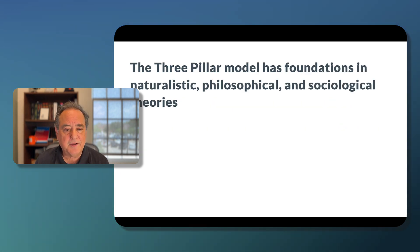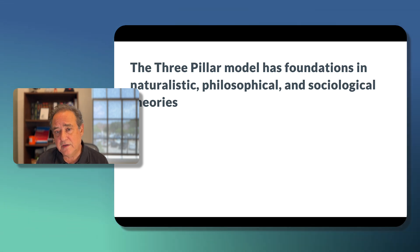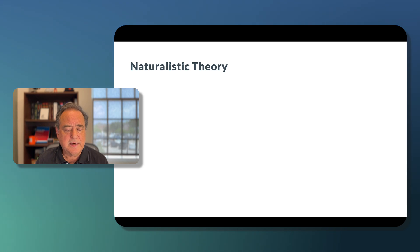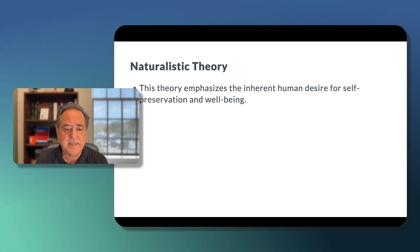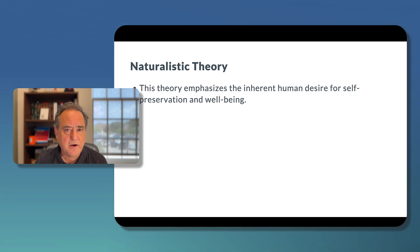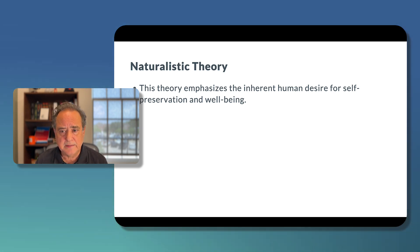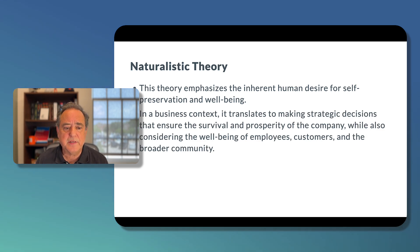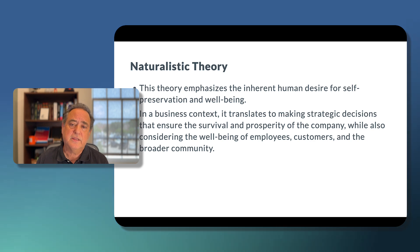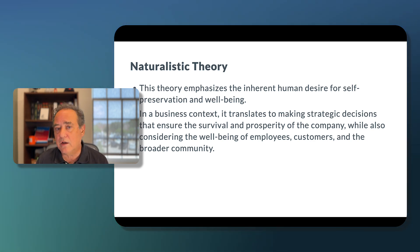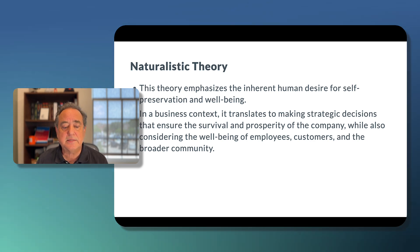The three-pillar model has foundations in naturalistic, philosophical, and sociological theories. Naturalistic theory emphasizes the inherent human desire for self-preservation and well-being. In a business context, this translates to making strategic decisions that ensure the survival and prosperity of the company, while also considering the well-being of employees, customers, and the broader community.